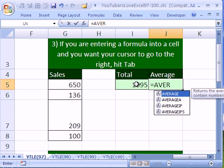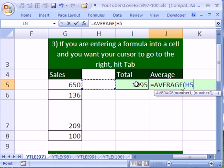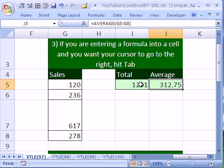Equals average, then arrow, arrow, arrow, Ctrl+Down arrow, Ctrl+Enter. So that's Tab.